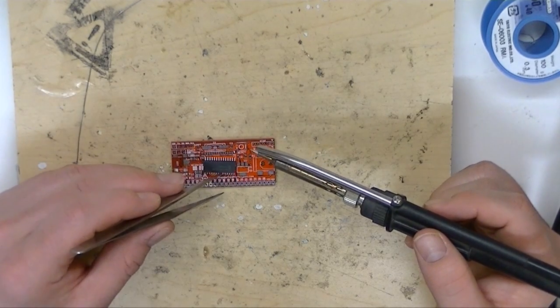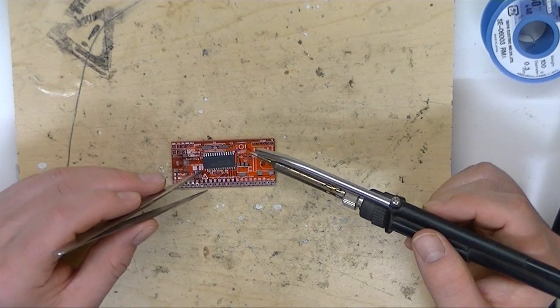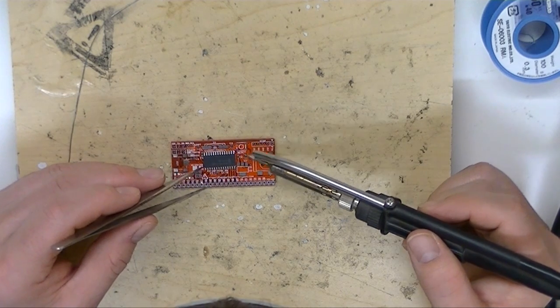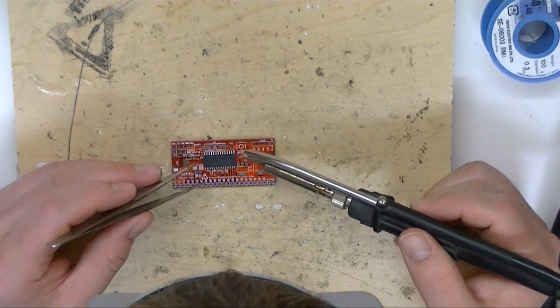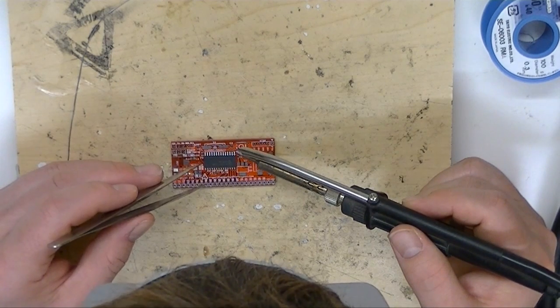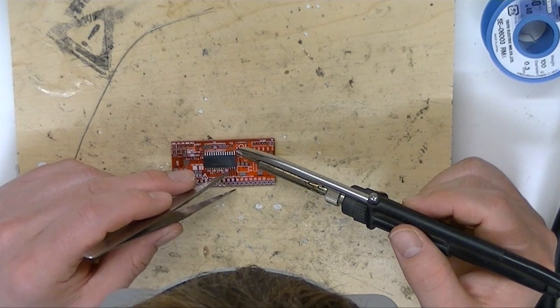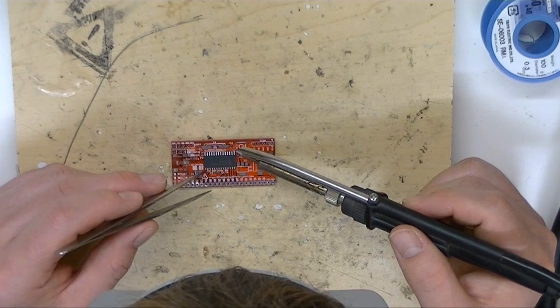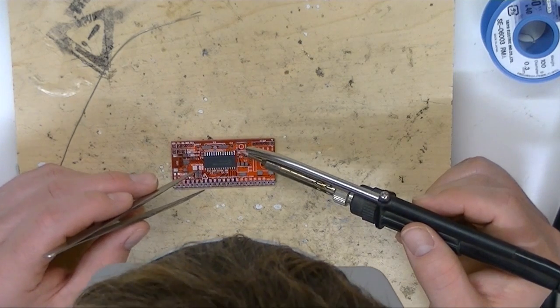We'll slide the chip into place. This is SOIC, so it's not really too particularly trying. So melt that first pin. Position the chip. Looks good.